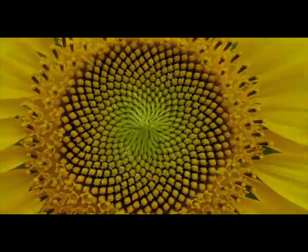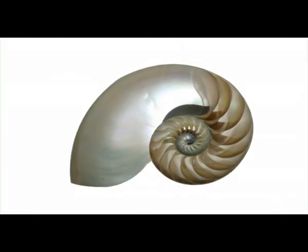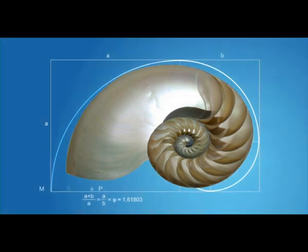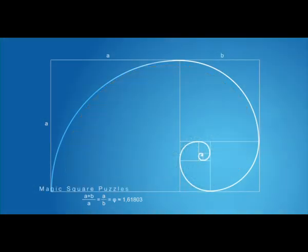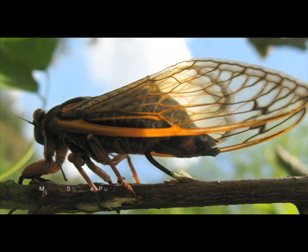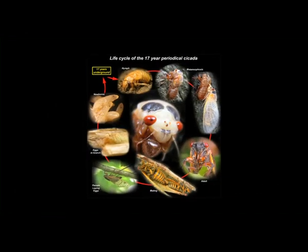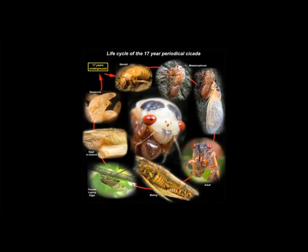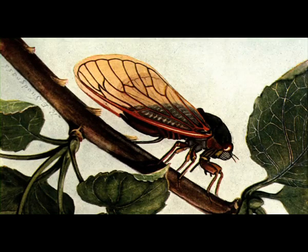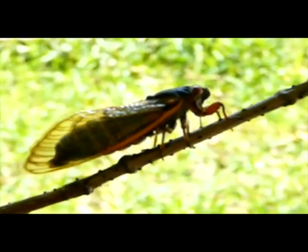There is the Fibonacci series in nature. The structure of a shell of an oyster is an expression of the Fibonacci series. Nature has made the insect called cicada to reproduce in a 13-year cycle or a 17-year cycle. The numbers 13 and 17 are prime numbers. Because of this, cicada experiences fewer predator attacks.